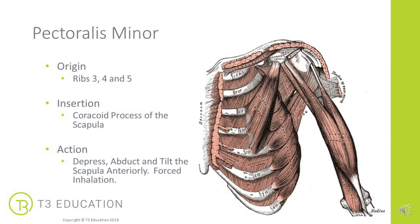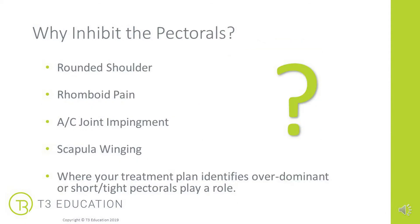Given its scapular attachment, pec minor is really important in scapular dysfunction — things like winging of the scapula or impingements involving the scapula, such as AC joint impingement. Why target the pectorals for inhibition? In practice, short, over-dominant, overactive pectoralis major and/or minor play a role in so many clients' dysfunctions or discomforts. It's a really common area to address.